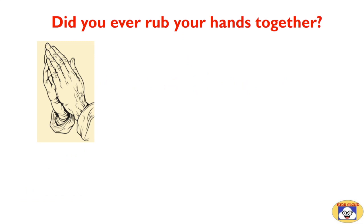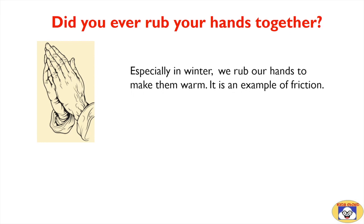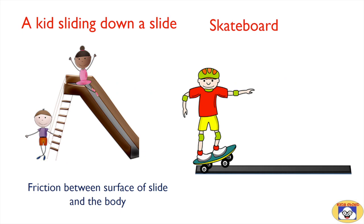Let's start this topic with a familiar example. Did you ever rub your hands together? I'm sure everyone must have, especially in winter — we rub our hands to make them warm. It is an example of friction. While rubbing, our hands move against each other and produce friction. In this process, the surface molecules get energy and heat is generated. As a result, we feel warmer. Thus, friction is a force acting between two touching surfaces that resists the motion of one relative to the other.